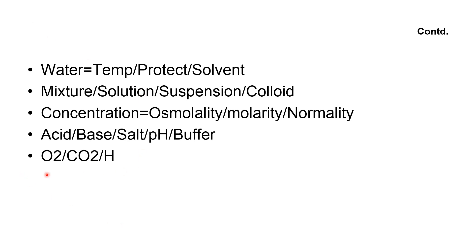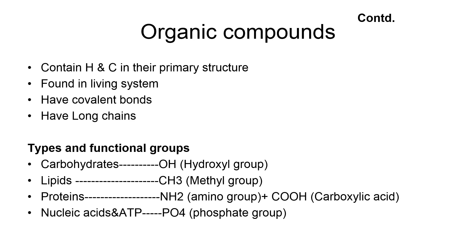Inorganic molecules like oxygen, carbon dioxide, and hydrogen are important in the body. Organic compounds are only present in or extracted from living systems. Organic compounds contain both carbon and hydrogen atoms in their primary structure and may also contain oxygen, nitrogen, sulfur, phosphorus, and other elements. They mostly form long chains of carbon atoms linked by covalent bonds, making them very stable and very large molecules.